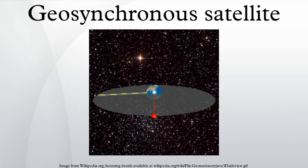A special case of geosynchronous satellite is the geostationary satellite, which has a geostationary orbit or a circular geosynchronous orbit directly above the Earth's equator. Another type of geosynchronous orbit used by satellites is the Tundra elliptical orbit.